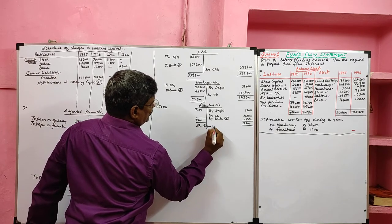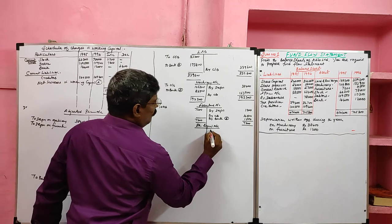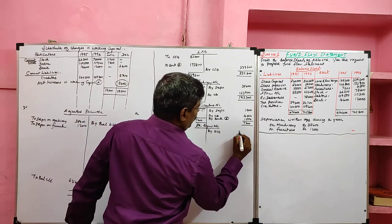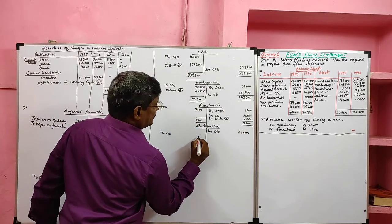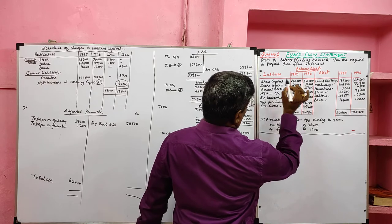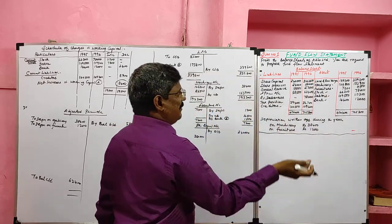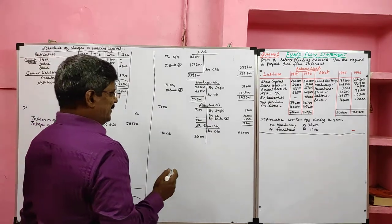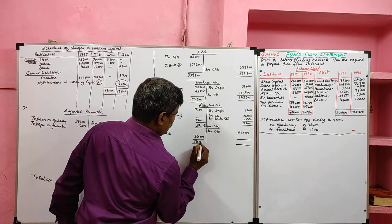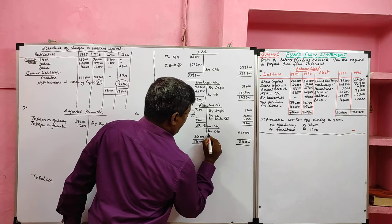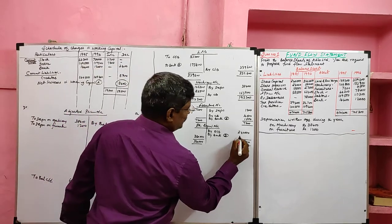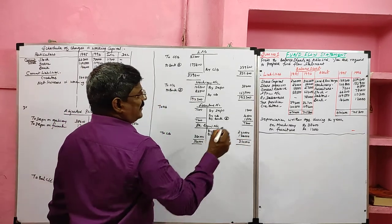First item on the liability side is share capital. It is a liability, so the opening balance is credited and the closing balance is debited. Opening balance 2,40,000, closing balance 3,60,000. Share capital has increased, so the difference of 1,20,000 goes to the sources side as issue of share capital. Then share premium: also a liability.